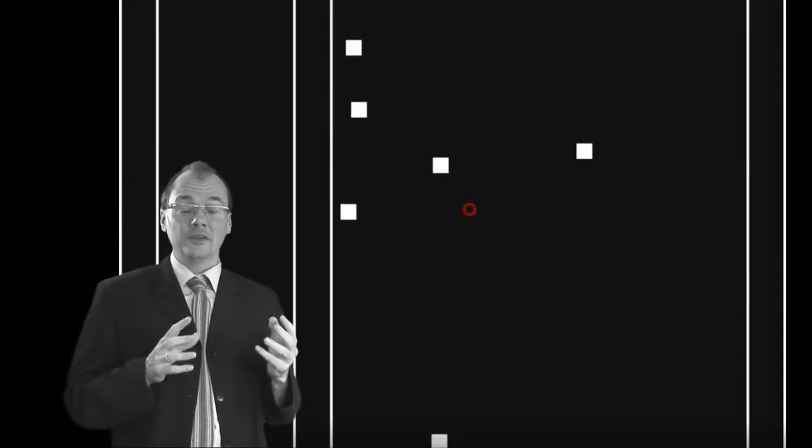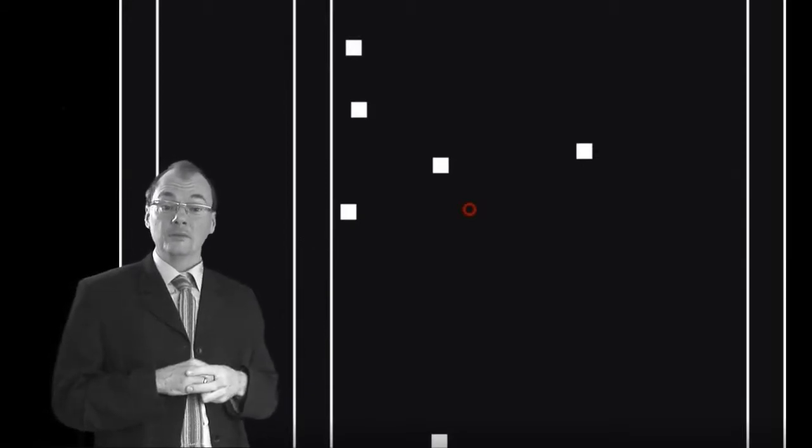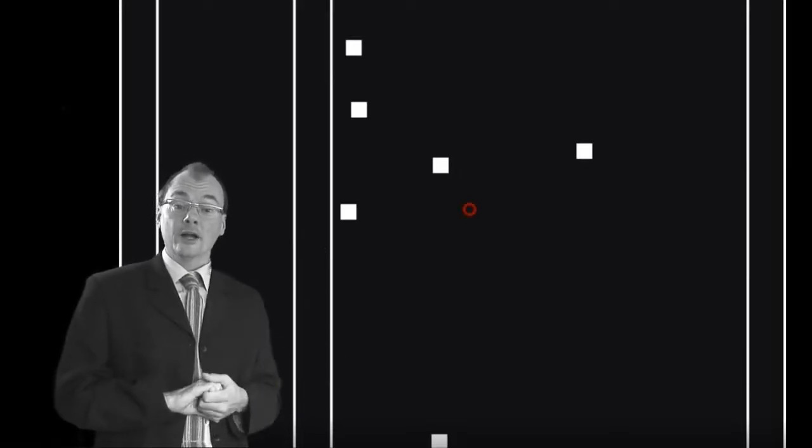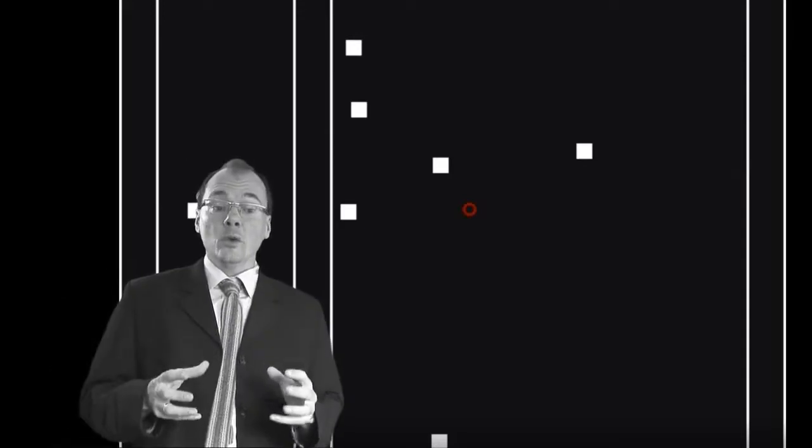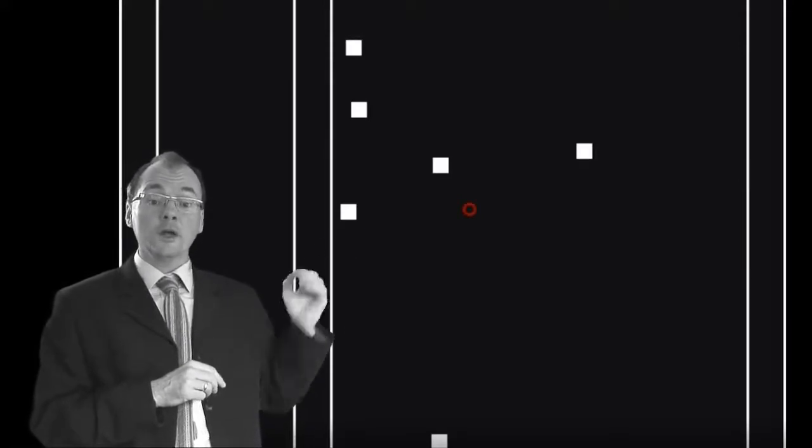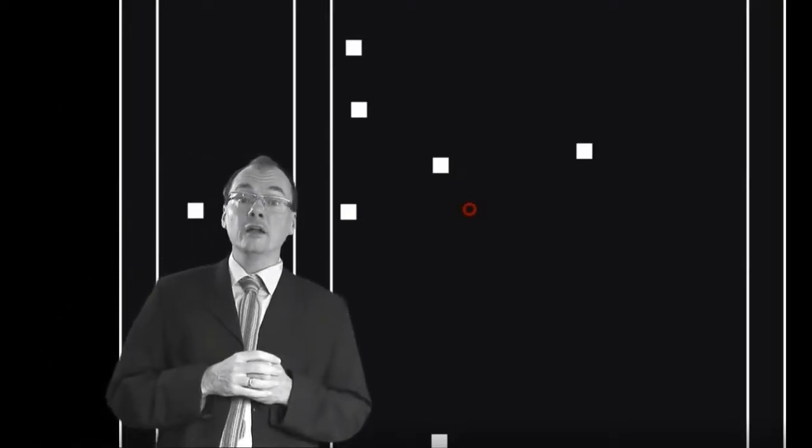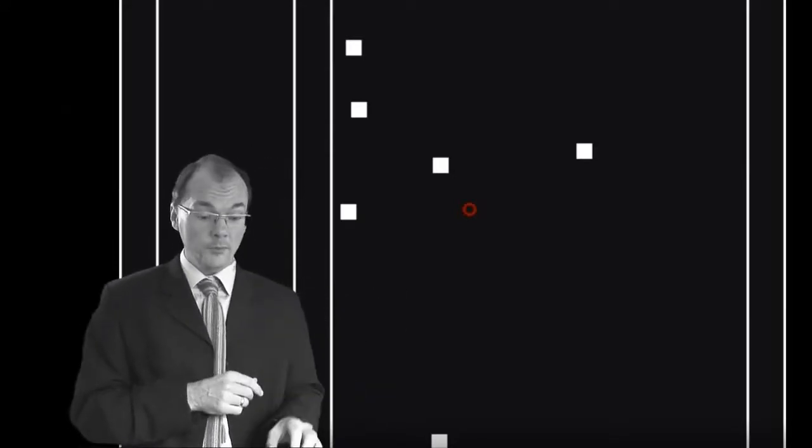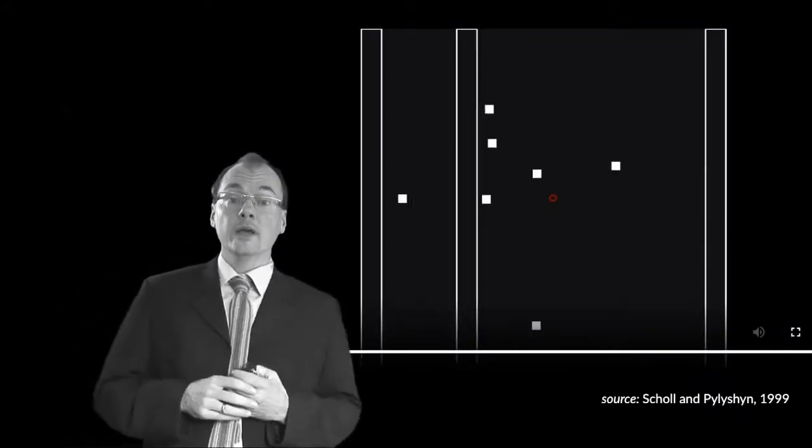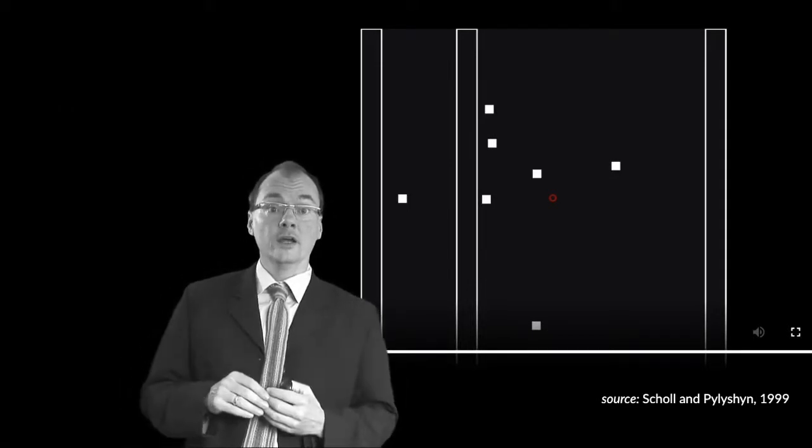Now, what you should notice here is that although the dots disappeared behind what we might imaginatively call barriers, you were probably, like most of the subjects in Scholl and Pylyshyn's experiment, nevertheless able to keep track of their movements. So I hope that worked for you. But even if it didn't, the important point is just that in experiments, subjects will reliably keep track of moving objects, even if those objects are temporarily hidden from view by barriers.